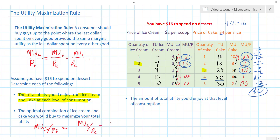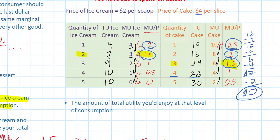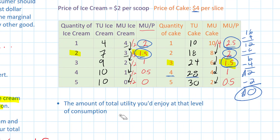That actually occurred at a quantity of two ice creams and three cakes — that's where the marginal utility per dollar spent were equalized. So what's my total utility at this level of consumption?